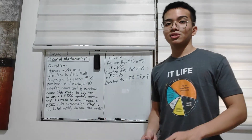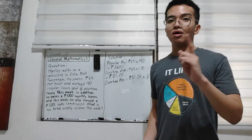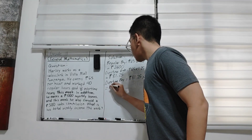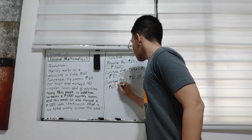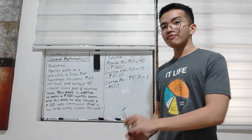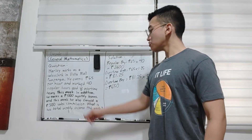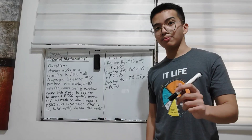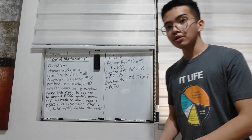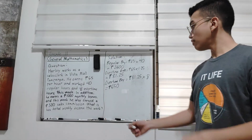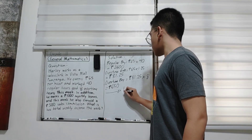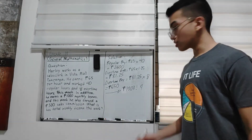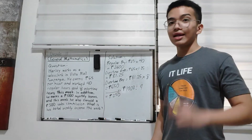You can solve this manually or use a calculator — that comes to 650 pesos. Now, for the 1,000 pesos monthly bonus: since we need the weekly equivalent, we divide 1,000 by 4 weeks, which gives us 250 pesos.